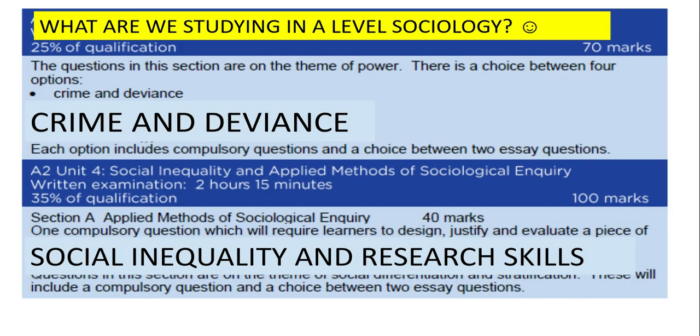In Year 13 at A Level, we study about crime and deviance — what makes a crime a crime, does it depend on which society you live in, or where you are, or who you are, and what defines deviance and has this changed through time. Then we look at social inequality across the UK and the world, and why this is the case — does it matter whether you have a lower social class, your ethnicity, or your gender. We also look at research skills and how you compose a study of your own, which is useful for other subjects such as biology, geography, health and social care, and maths.